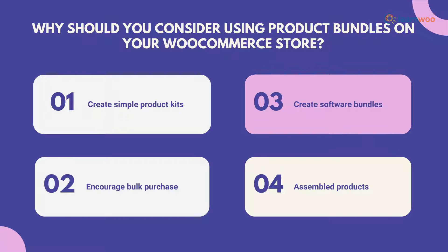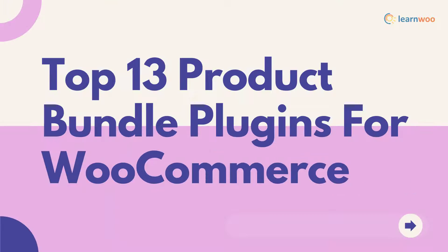Create software bundles: if you are selling digital products like music albums or software, you can make use of these plugins to upsell when you have multiple products customers find useful at the same time. Assembled products: sometimes you sell products that need to be assembled and shipped, for example a kids' bike that has several components assembled together to form the final product.